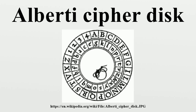The Vigenère cipher is based on a single ordinary alphabet like that of Caesar and is easily solved after discovering its fixed period by means of the Kasiski examination. This is not possible with Alberti.